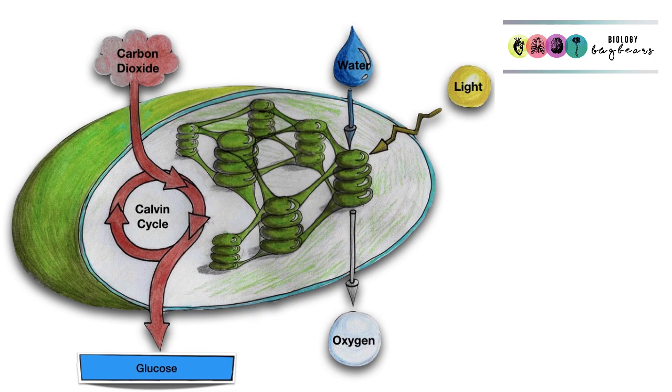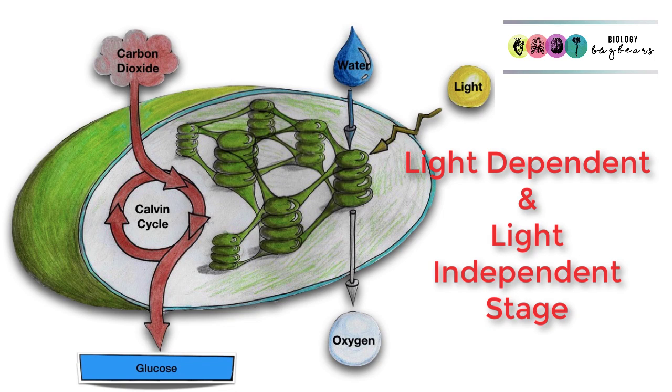You know that the whole process takes place in these organelles known as chloroplasts found in plant cells. It involves two types of reactions: light-dependent reactions and light-independent reactions.